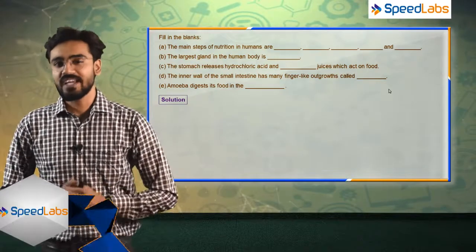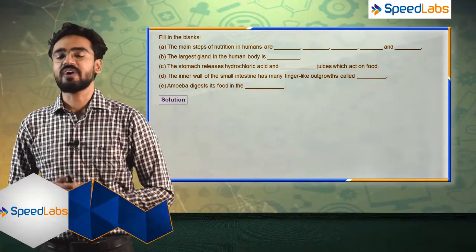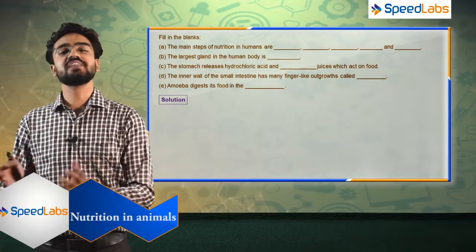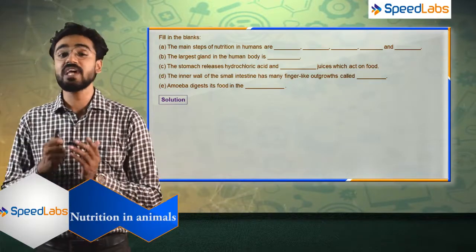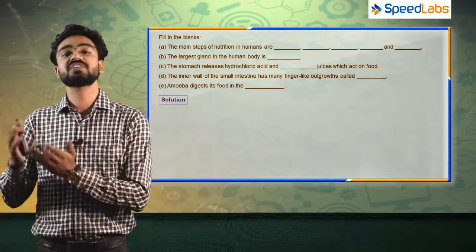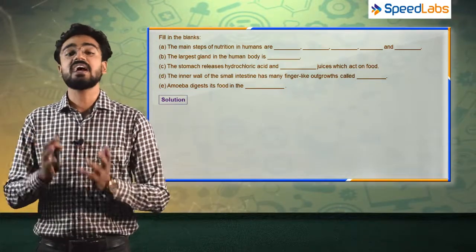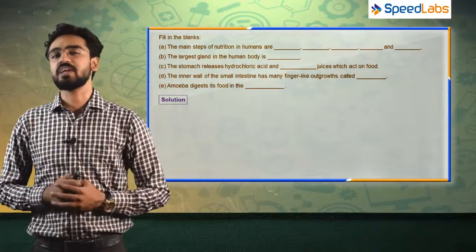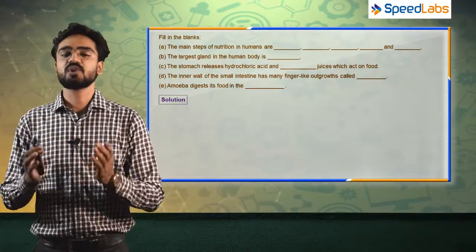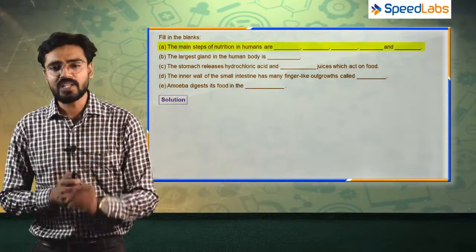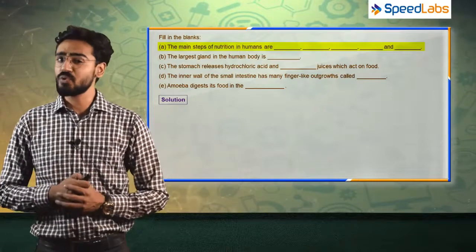The questions are in the form of fill in the blanks and we have to describe the digestive system and other organs of our human body. The first question is asking about the main steps of nutrition in humans.